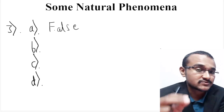Coming to the fifth question, we have to explain why a charged body loses its charges when we touch it with our hands. This is because the human body is a very good conductor. When you touch a charged body with your hands, your body receives the charges from it. Hence the charged body easily loses its charges through the human body to the earth — those charges flow through your body and enter the earth's surface.